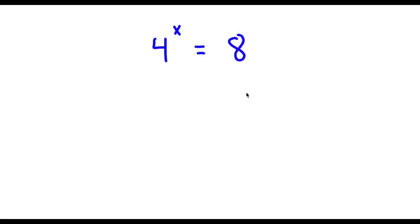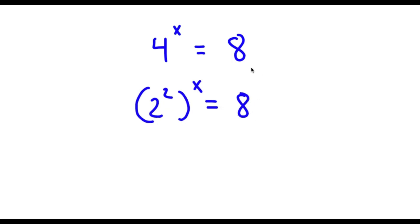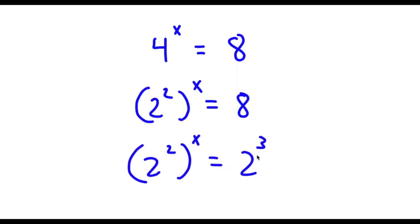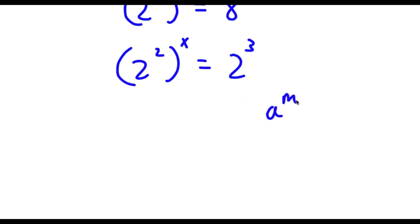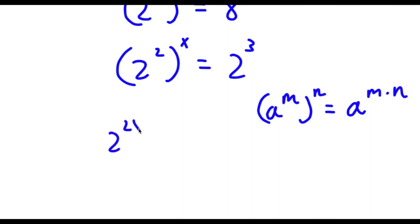Alright, so I have 4 to the power of x is equal to 8. To solve this, first off 4 is the same thing as 2 squared. So I have 2 squared to the power of x equals 8. And 8 is the same thing as 2 to the power of 3. Using the rule a to the power of m to the power of n equals a to the power of m times n, I get 2 to the power of 2x equals 2 to the power of 3.